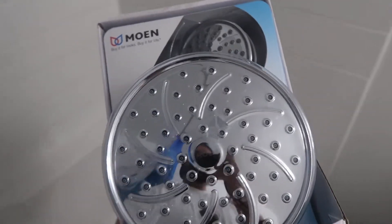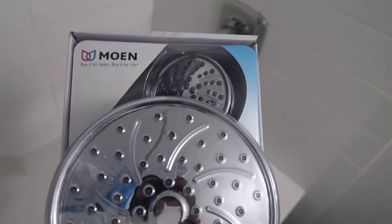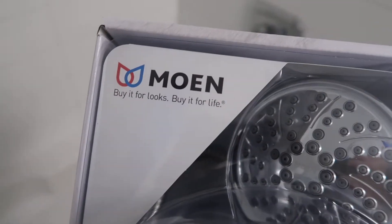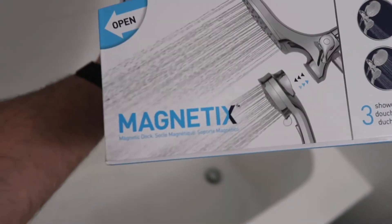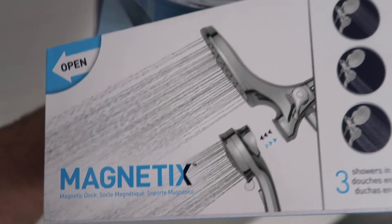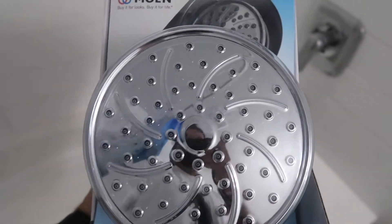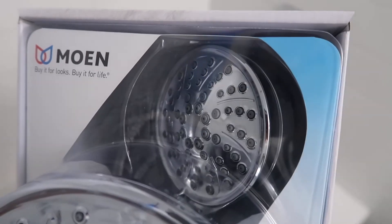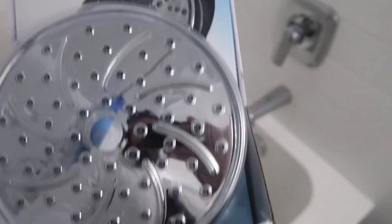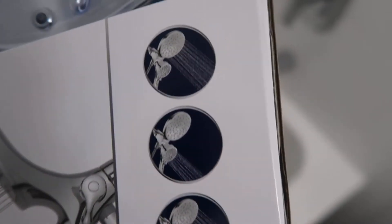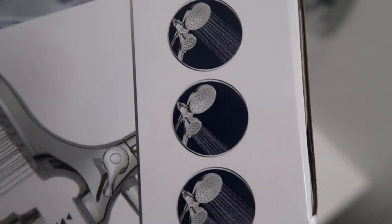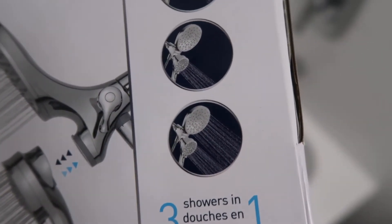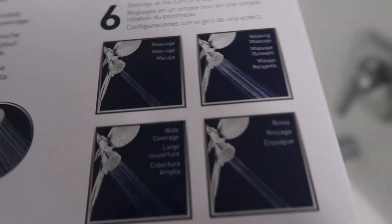Hey guys, so today I'm doing a review and install of the Moen magnetic showerhead. It comes with one big showerhead and one that you can take off and move around. It comes with three different settings: you can have just the big one, just the small one, or both together. I got this for $150 Canadian.